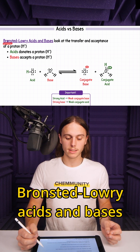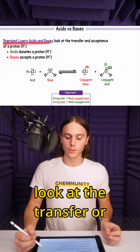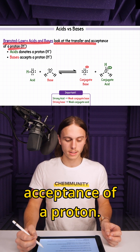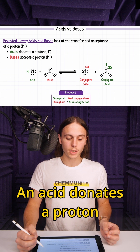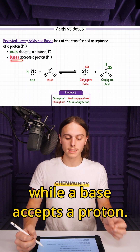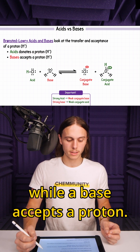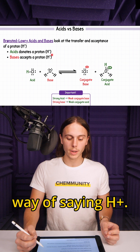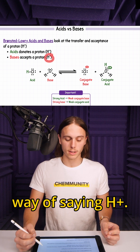Brønsted-Lowry acids and bases look at the transfer or acceptance of a proton. An acid donates a proton, while a base accepts a proton. A proton is just a fancy way of saying H+.